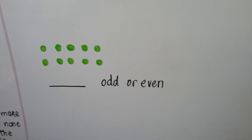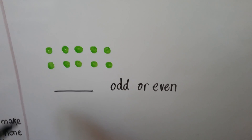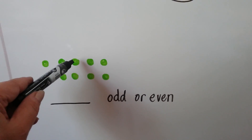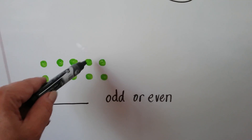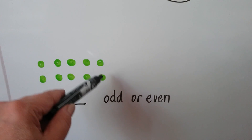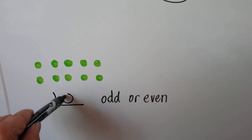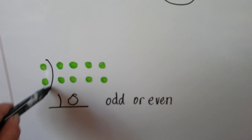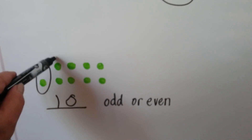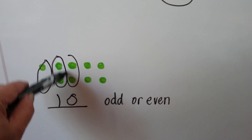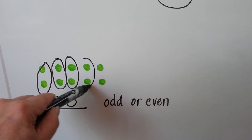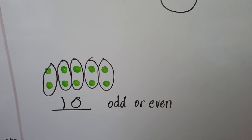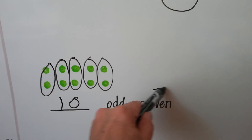How many little green dots do we have here? 1, 2, 3, 4, 5, 6, 7, 8, 9, 10. There's 10. We can make pairs, and there's none left over, so it's even.